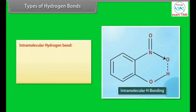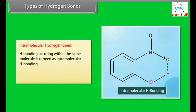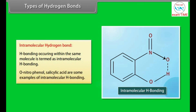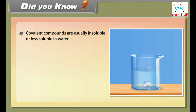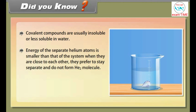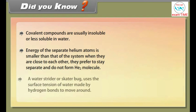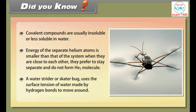Intramolecular hydrogen bonding occurs within the same molecule. O-nitrophenol and salicylic acid are examples of intramolecular hydrogen bonding. Covalent compounds are usually insoluble or less soluble in water. Helium atoms prefer to stay separate as the energy of the separate atoms is smaller than that of the system when they are close together, and so He2 does not form. A water strider uses the surface tension of water, made possible by hydrogen bonds, to move around.